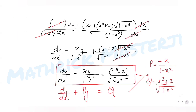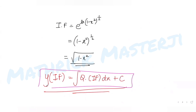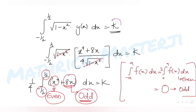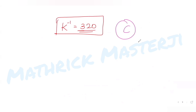To summarize: I converted the differential equation into the standard form dy/dx + Py = Q, found P and Q, computed the integrating factor √(1 - x²), solved the ODE using the initial condition to get y(x), then evaluated the given integral using even and odd function properties to find k = 1/320, so k⁻¹ = 320, option C.